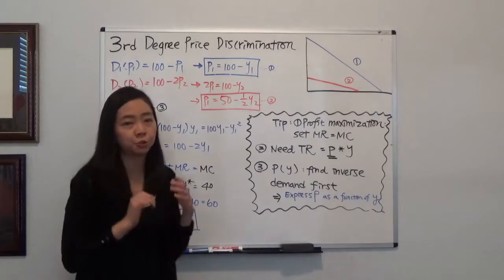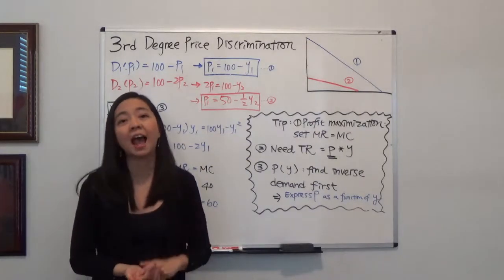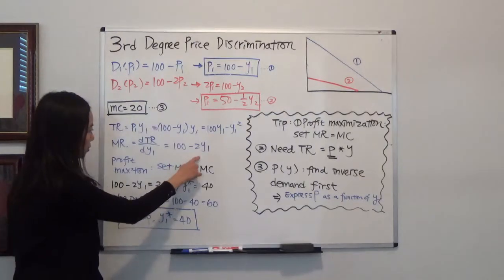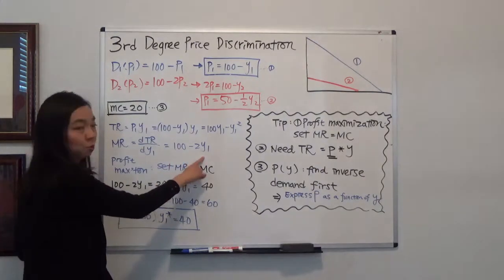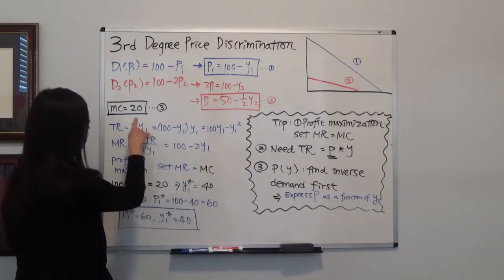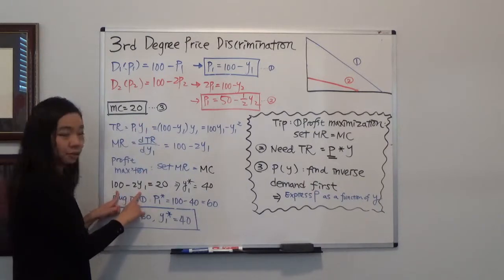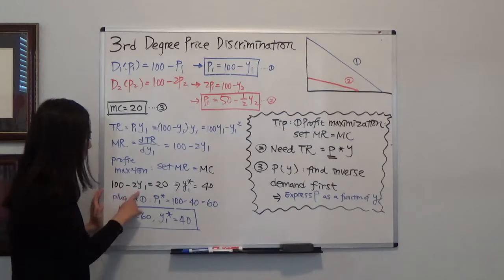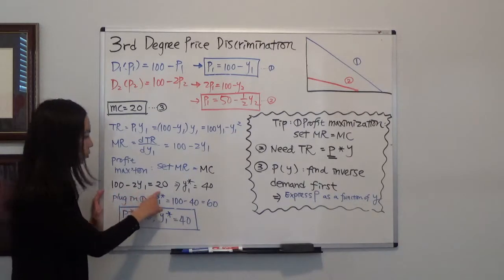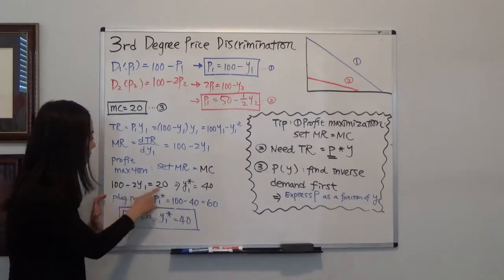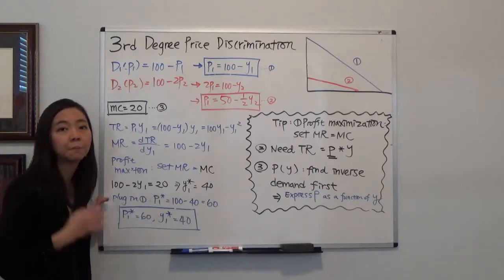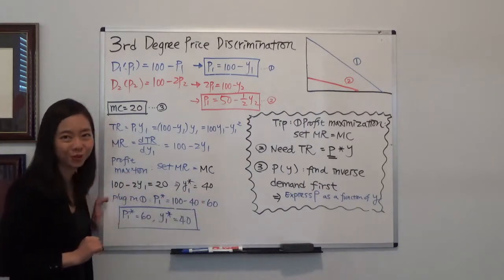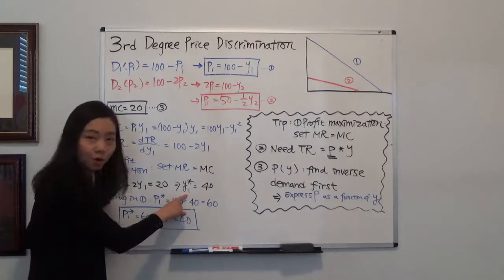To maximize profit, we set marginal revenue equal to marginal cost. Marginal revenue is 100 minus 2y1 and marginal cost is 20. Solving 100 minus 2y1 equals 20, the optimal quantity y1 star is equal to 40.